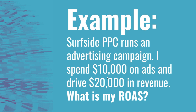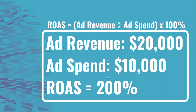So what is my ROAS in this case? Using the ROAS formula, it is 200%. What you want to do is take your ad revenue, divide it by your ad spend, and then multiply it by 100% so you can show your ROAS as a percentage. If you take $20,000 divided by $10,000, you get two — so you want that expressed as a percentage, which is 200%.